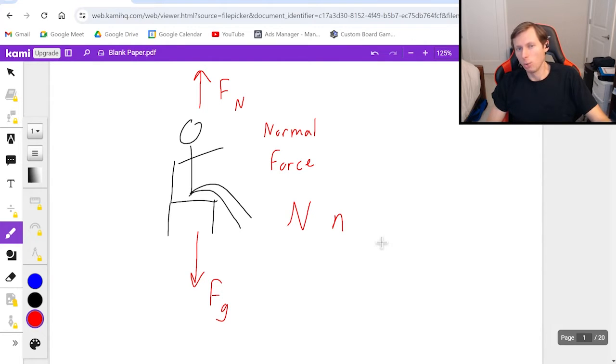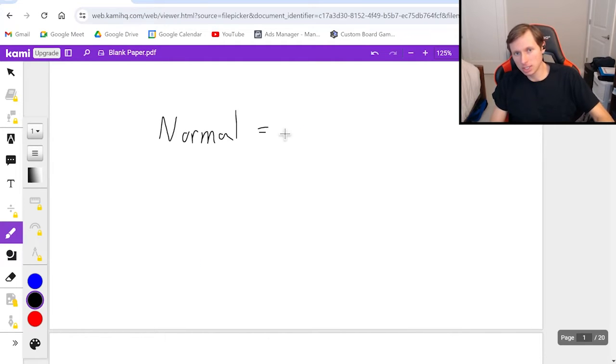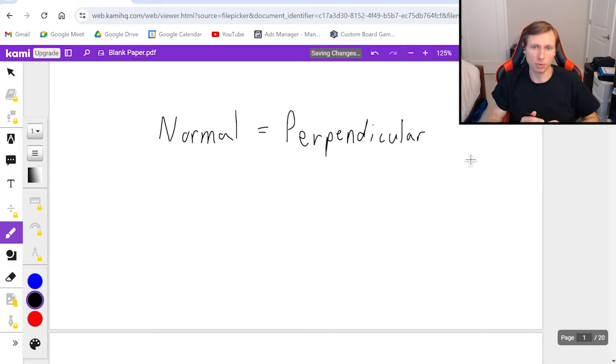But a great question is, why is it called the normal force? And I'll tell you exactly why. The word normal here does not mean normal. It's not the opposite of weird. Normal is the math definition where normal actually means perpendicular. And so the reason why it's called the normal force is because the normal force is always perpendicular to the surface you're on.